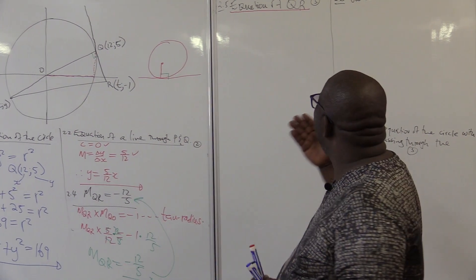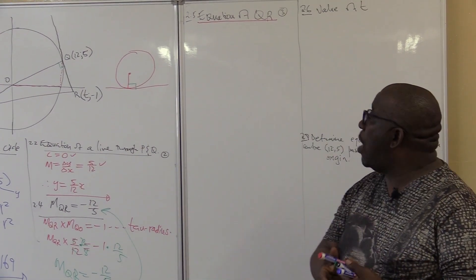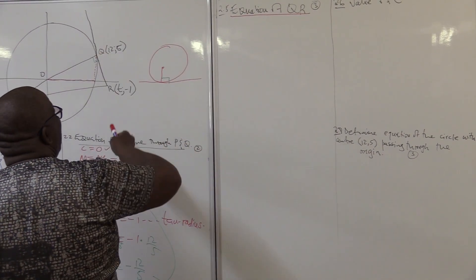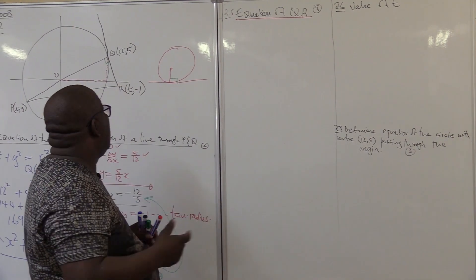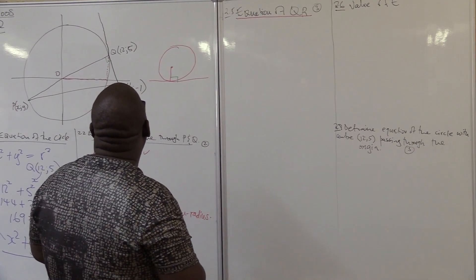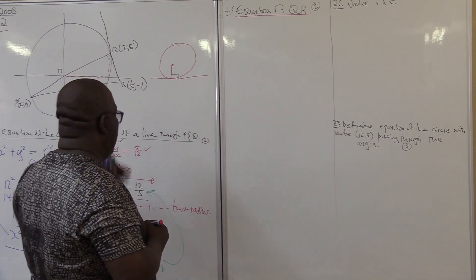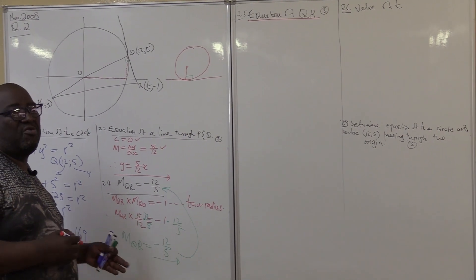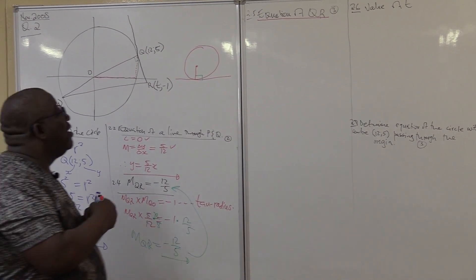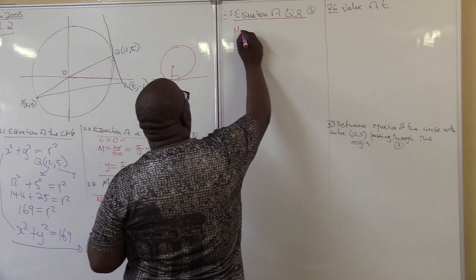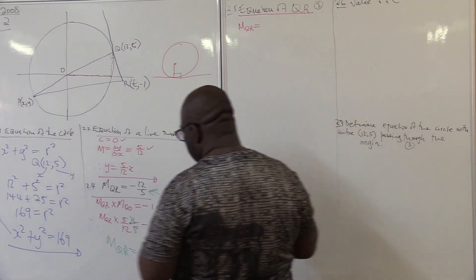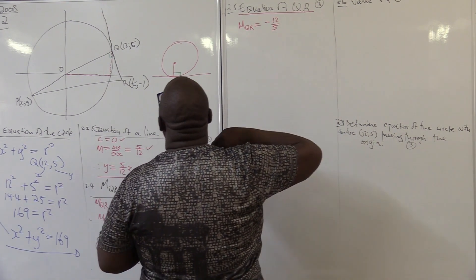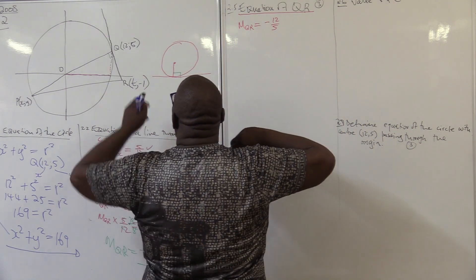Now find the equation of QR. QR is a straight line, so you're looking for m and c. We already have point Q with coordinates (12, 5), and we already calculated the gradient of QR, which is −12/5. We just need c or another point. Do I have any point on QR? Yes, I have point Q.